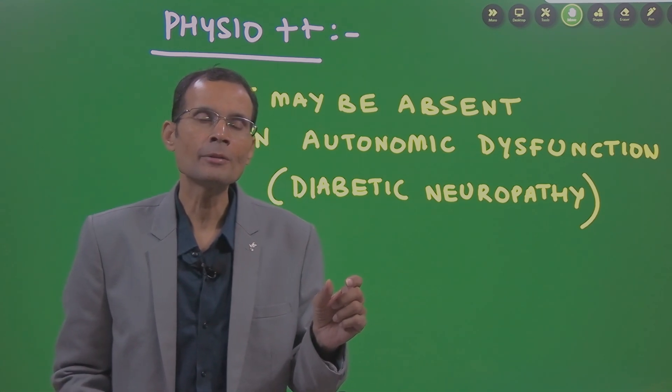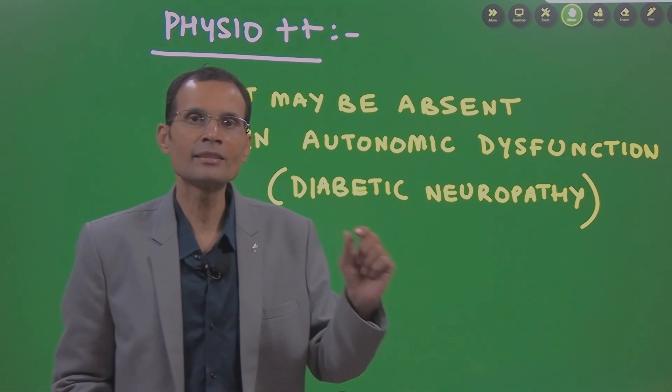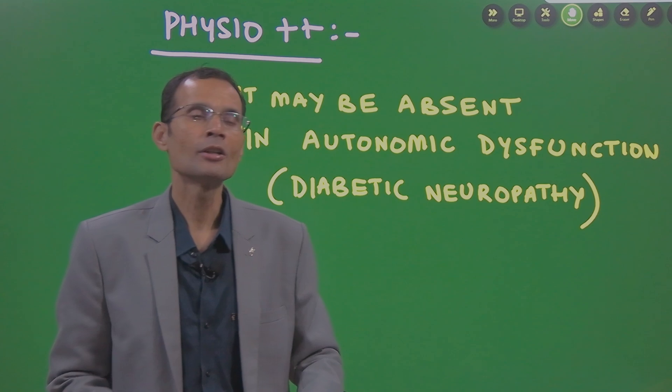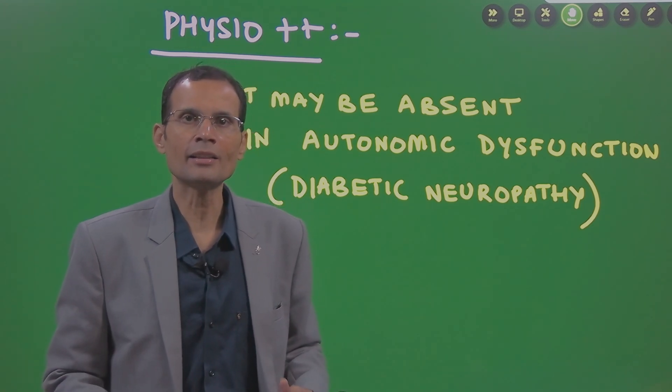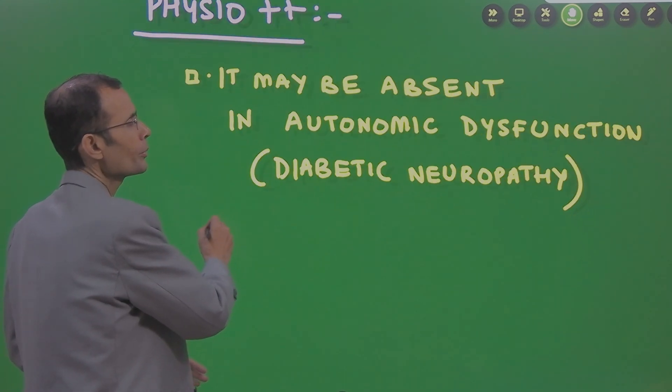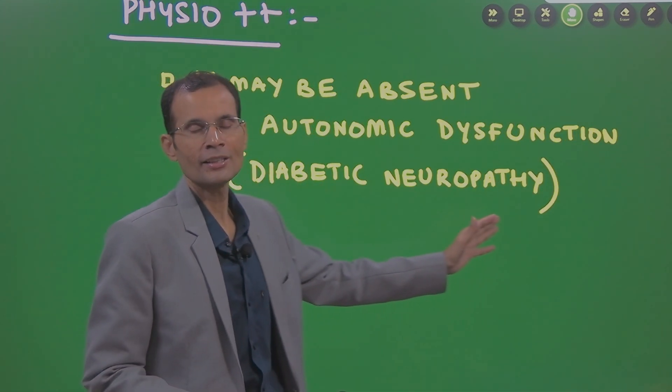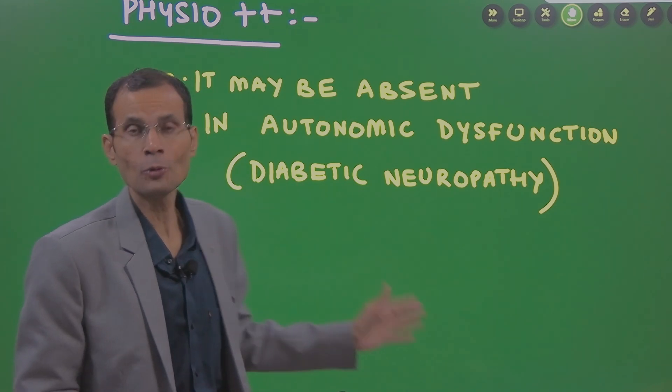That is diabetic neuropathy. You know, diabetic neuropathy generally affects the sensory system first, sensory nerves, then the motor nerves and then the autonomic nerves. That is generally the case.